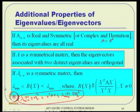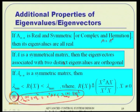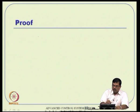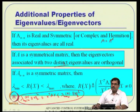Let us prove that for a real symmetric matrix, eigenvalues are real. We want to show that if A = A^T, then eigenvalues are real. Start with A*X = lambda*X. Taking the complex conjugate of the entire equation, we also have A*X_bar = lambda_bar * X_bar, since A is real.